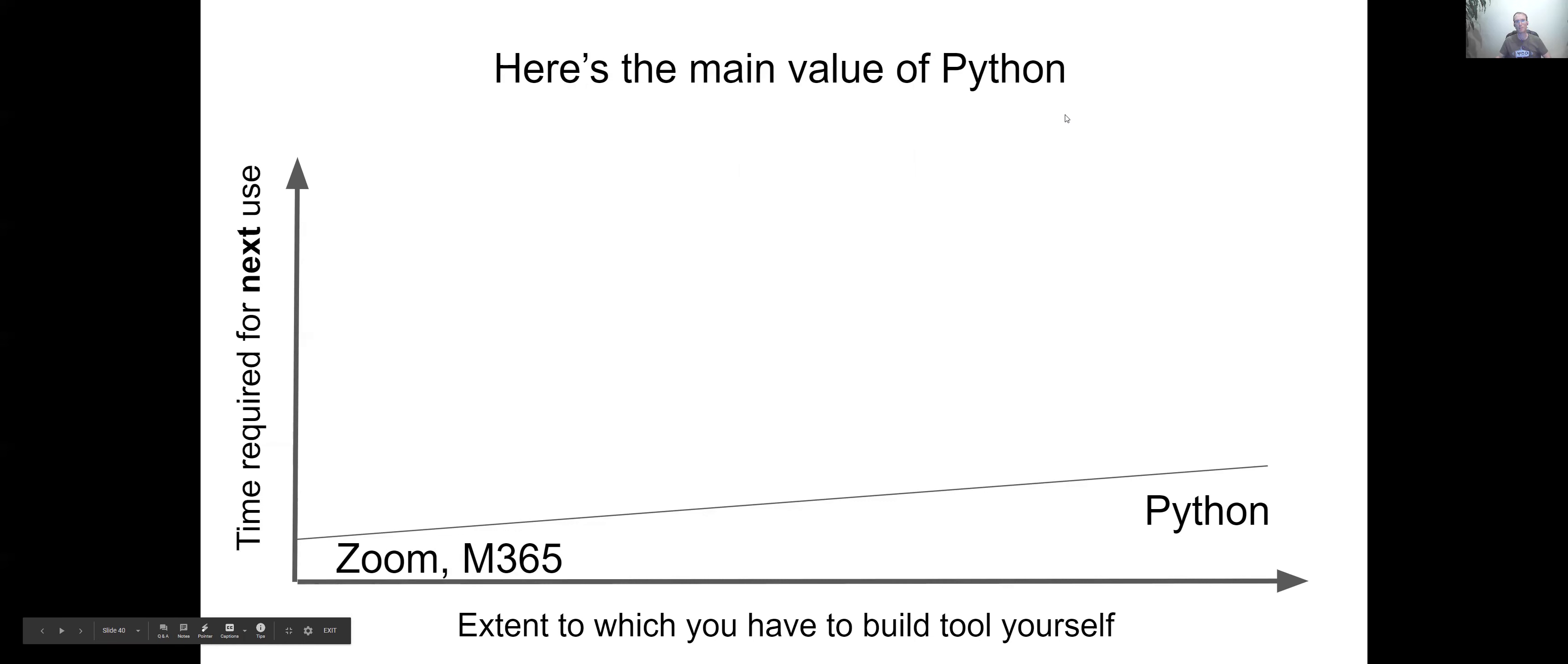So once you've built a tool that helps you get your work done, even though it takes a long time the first time, from then on it takes a lot less time, even though it's something that you built yourself. So that's kind of special. You know, then this becomes the main value of Python. You start to approach the amount of time it takes to use an off-the-shelf product to actually do something that you've built yourself. And what you're using it for is something very specific that Microsoft or Zoom or anybody else might not necessarily spend a bunch of time building a tool for you in order to accomplish.